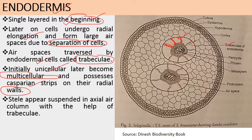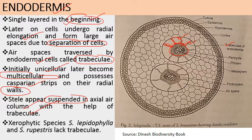The stele appears suspended in an axial air column with the help of trabeculae — it looks like the stele is hanging in the center. In xerophytic species such as Selaginella lepidophylla and Selaginella rupestris, trabeculae are absent.